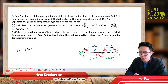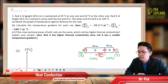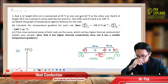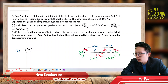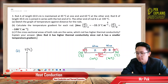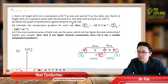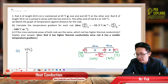This is the third question in heat conduction. Rod A of length 60 cm is maintained at 40 degrees Celsius at one end and 60 degrees Celsius at the other end. Rod B of length 40 cm is joined in series with the hot end of A. The other end of rod B is at 100 degrees Celsius. We need to sketch the graph of temperature against distance for the rods.